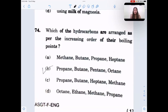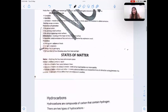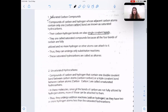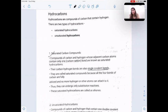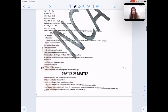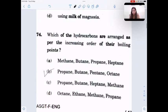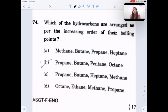Which of the following are arranged as per increasing order of their boiling point? This question can be answered from our knowledge of homologous series. The order is propane, butane, pentane, octane. Increasing order of homologous series, this is the answer.